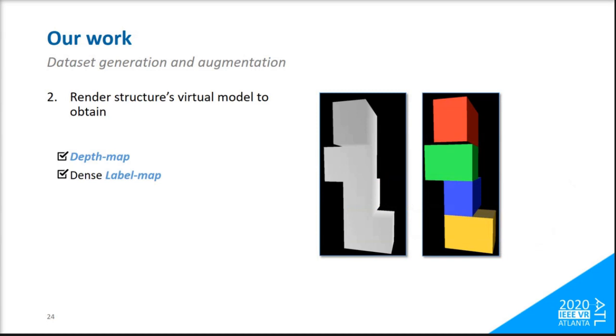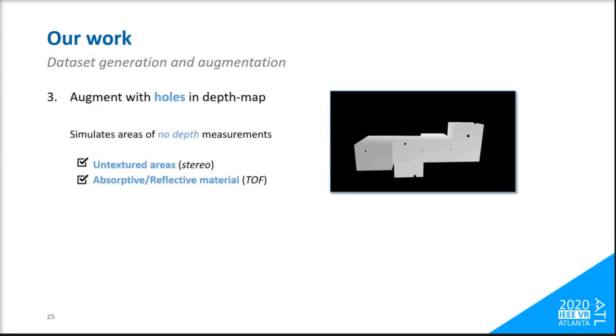We then render the virtual model of the box from each pose that, in addition to the depth map, also provides a dense per-pixel label map, which will be serving as ground truth. These rendered depth maps are nearly perfect, contain no noise, and are thus unrealistic samples.